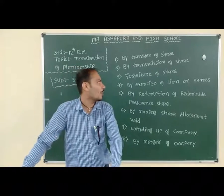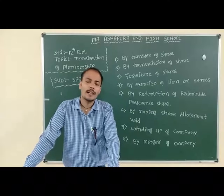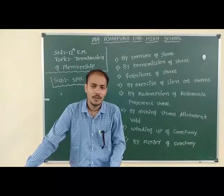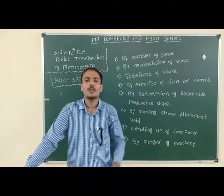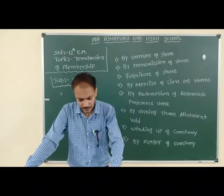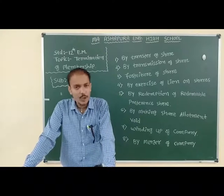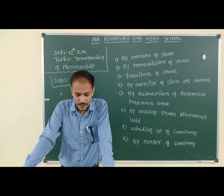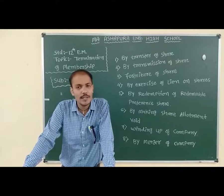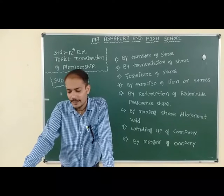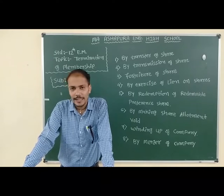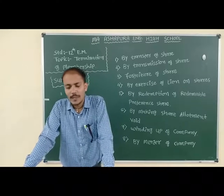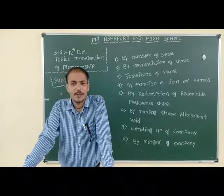Point four: By exercise of lien on shares. When a share is purchased and the share amount is owed to the company, the company exercises a lien on the shares to recover its dues from the member by selling those shares. The member's membership comes to an end when the shares are sold.